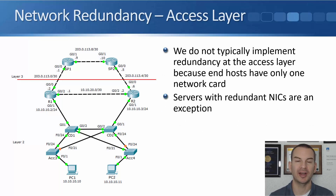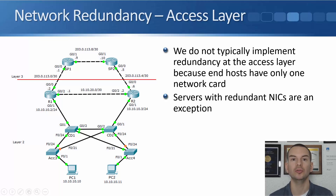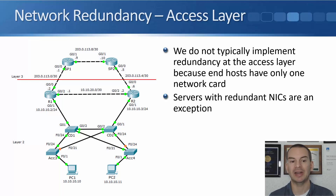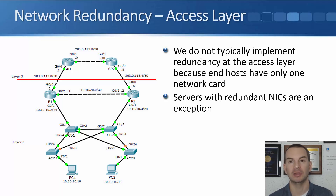You might have noticed that we don't have redundancy at the access layer. Access layer switch three — if that goes down, the PCs connected to it will lose connectivity. This is normal because desktop PCs typically just have one network card and can only connect into one switch anyway. An exception would be servers, which often have redundant NICs, so for servers you'll usually put in redundant access layer switches. But if an access layer switch goes down, it's only the PCs on that one switch which lose connectivity.